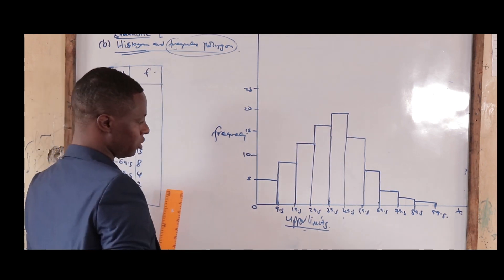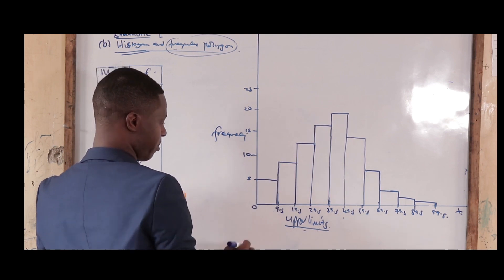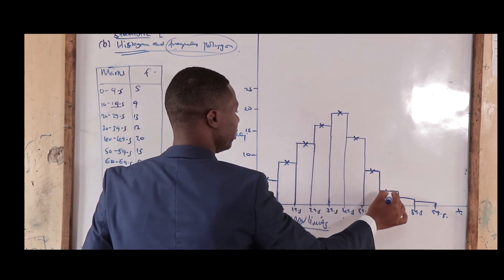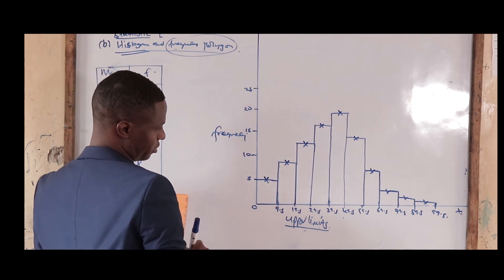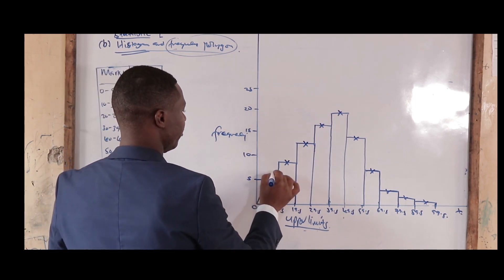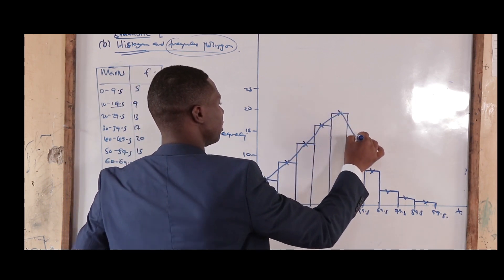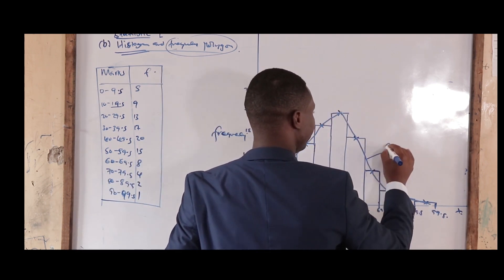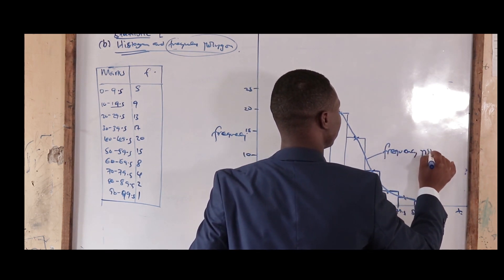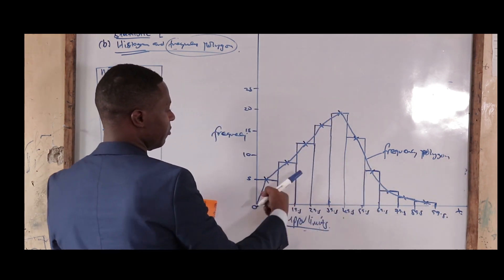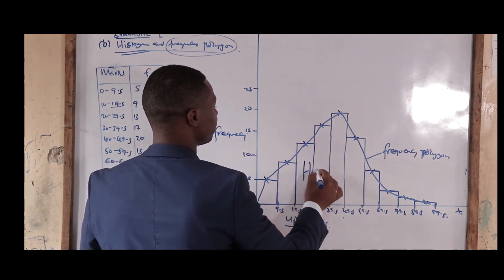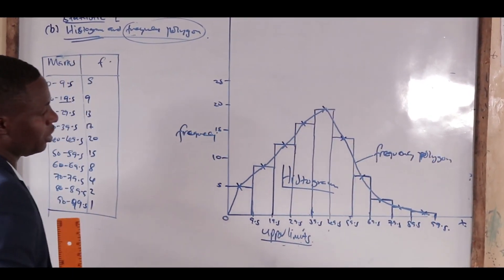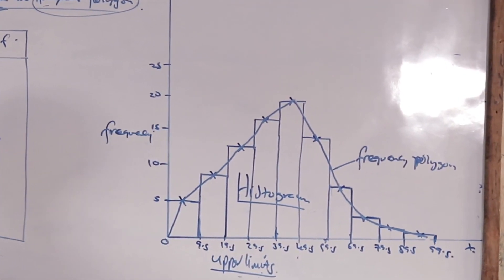To get the frequency polygon, you get the midpoints of each bar in the histogram. You mark the middle of each bar, then you join those midpoints with a freehand line — you don't have to use a ruler. This curve or line that connects all the midpoints is the frequency polygon. The bars are the histogram, and the line joining their midpoints is the frequency polygon. That is how you draw a histogram and frequency polygon.